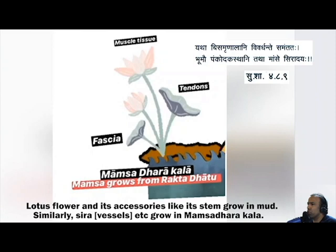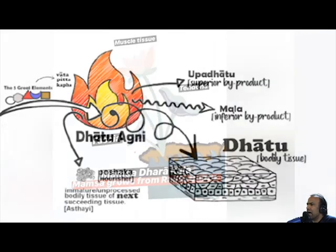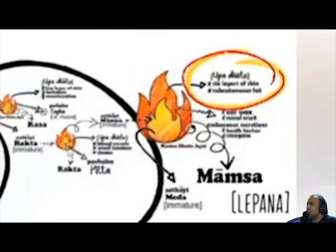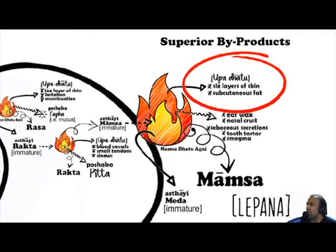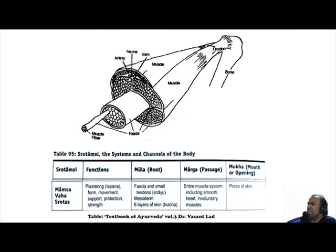Just as the lotus grows from mud, similarly Mumsadatu grows from Rakta. Being a Dhatu and therefore having byproducts, the superior byproducts of Mumsadatu are skin and subcutaneous fat. Taking into consideration Mumsavahasrotas, this helps to explain the formation of fascia and small tendons.